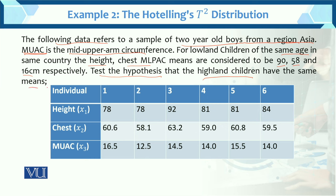Now the variables we have: we have a total of 6 children, and we have checked their height, chest, and MUAC. We need to perform a hypothesis test for same means. And the values given — 90, 58, 16 — are the population means.